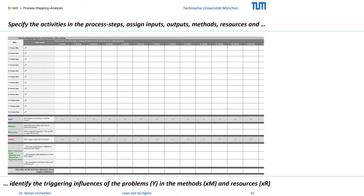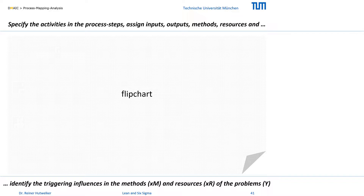If you do not perform all process steps of the SIPOC yourself between the first input and last output, you should conduct a workshop with the employees who perform the activities and know the negative influences from their daily work. If you first map and analyze the process on flipcharts, all participants can easily follow and contribute. Only after the workshop should you transfer the most important information from the flipcharts into SigmaGuide.